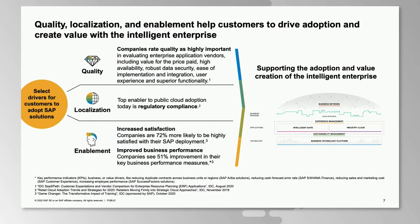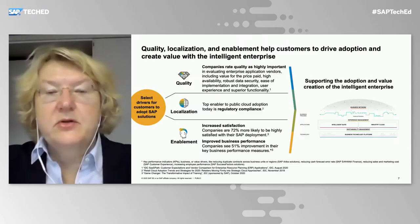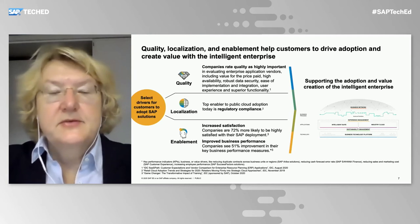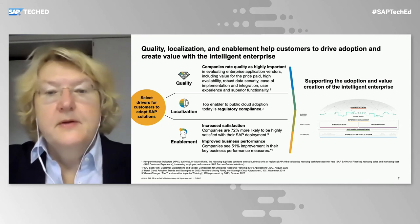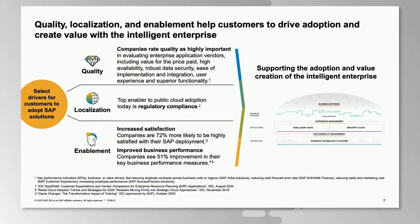First, quality — companies await quality as highly important. It enables them to perform with solutions in a very timely manner, and it's not only about experience, but about superior functionality, robust data security, and ease of availability. Second, localization — regulatory compliance is the top enabler to public cloud adoption. Third, user enablement — companies are 72% more likely to be highly satisfied with SAP deployments when users are enabled. On average, there is around 50% improved business performance when people have learned prior to using SAP software.